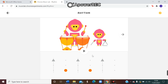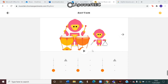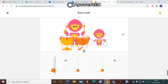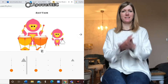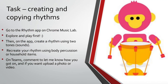I'll go and show you an example of how that might look. For example, with this rhythm, I could pat my knees every time there's the orange circle and clap my hands every time there is the grey triangle. Now it's over to you — use the Rhythm app on Chrome Music Lab, have a play and explore, then create a rhythm using two tones and recreate it using body percussion or items around the house. Don't forget to let me know how you get on by commenting on your Teams. Good luck and enjoy.